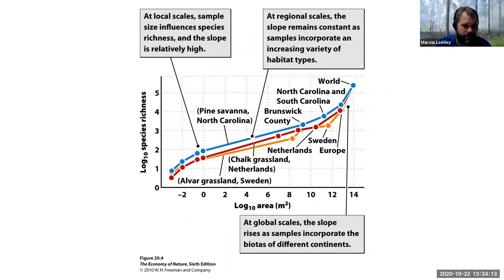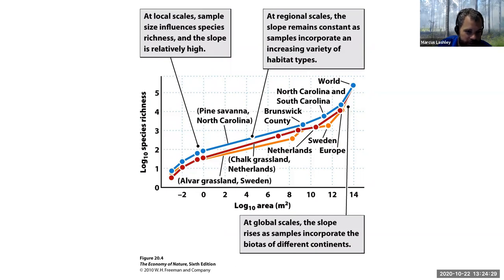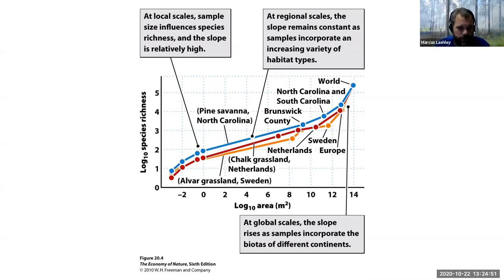Here are some examples showing this from really small grasslands and savannas all the way up to the world scale. As you increase the area of the habitat type, we have this nice relationship with how many species are present. Species richness is just the count of unique species in a given area. We've taken the log of the relationship, but basically as you increase the size of the area — the entire world would be at the far right of this axis — we see this nice relationship with species richness and area.